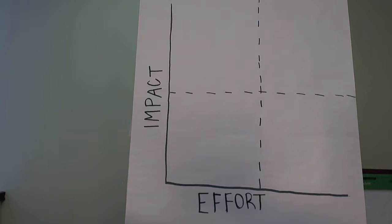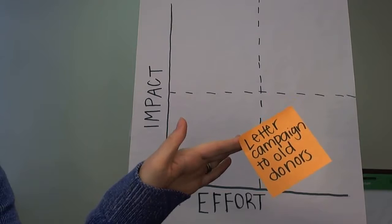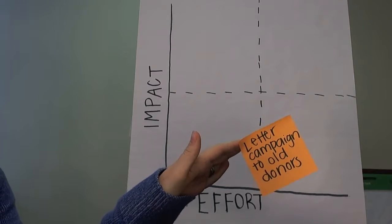Now let's look at another example — not at operations level but more looking at fundraising. In this example, we're going to ask the question: how should we fundraise for our building's new computer lab for the after-school program? Our common understanding of impact is we are going to get money for the new computer lab quickly and effectively. One idea is a letter campaign to our old donors — a standardized letter to donors who have already contributed.